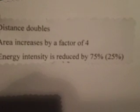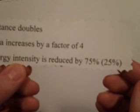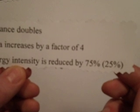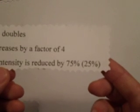The inverse square law says that as distance doubles from a light source, the area increases by a factor of 4, so the area becomes 4 times larger than it was. And because the light energy is going to stay the same, the energy intensity is reduced by 75%, or another way of thinking about it is that it's reduced down to one quarter. It's the same thing — it just depends on how you look at it.